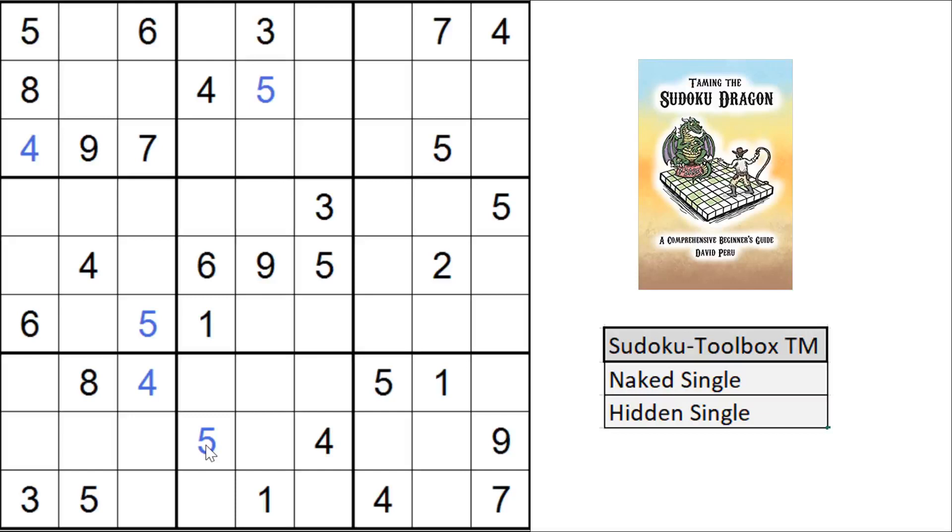Now let's look at the 6s. So 6 in column 1, 6 in column 3, one place left for 6 down here in block 7 right there. And if we look for... Now I'm looking for 7s, a 7 in row 3, row 1, one place left for a 7. It's right there in block 2.